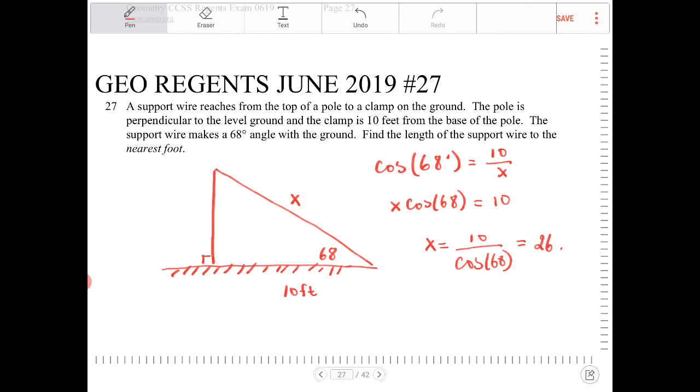And we want to round it to the nearest foot, right? So that means this is going to be approximately 27 then. So it's approximately 27 feet.